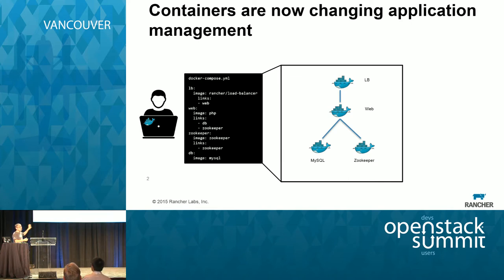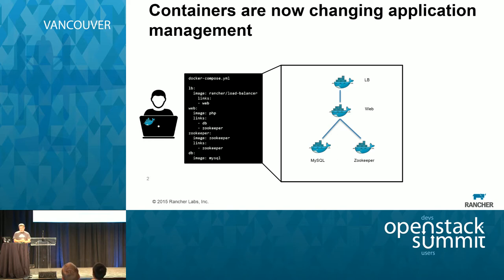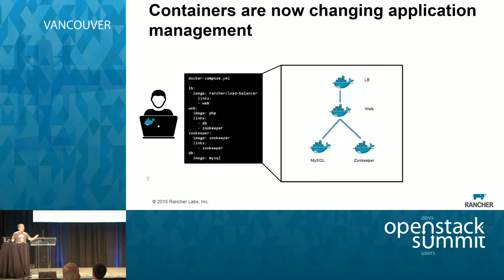You can use something called a Docker Compose template. It's so obvious what the application does — it describes four services: a load balancer service, a web service, a ZooKeeper locking service, and a database service. It also indicates how these services are linked together. With the click of a button or a simple command, a developer can instantiate this Docker Compose template on their laptop or in a cloud instance. That's why it's so powerful.